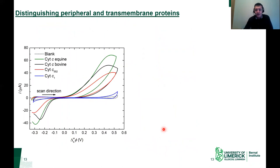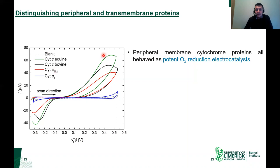Using our biomembrane system, we found we could distinguish between peripheral and transmembrane proteins. We tested a series of peripheral cytochrome C proteins — equine cytochrome C, bovine cytochrome C, and cytochrome C552. All of these peripheral membrane cytochrome C proteins behave as potent oxygen reduction electrocatalysts in our system. Cytochrome C552 is a relatively divergent mutant cytochrome C but is still a peripheral protein and still active as an oxygen reduction electrocatalyst.